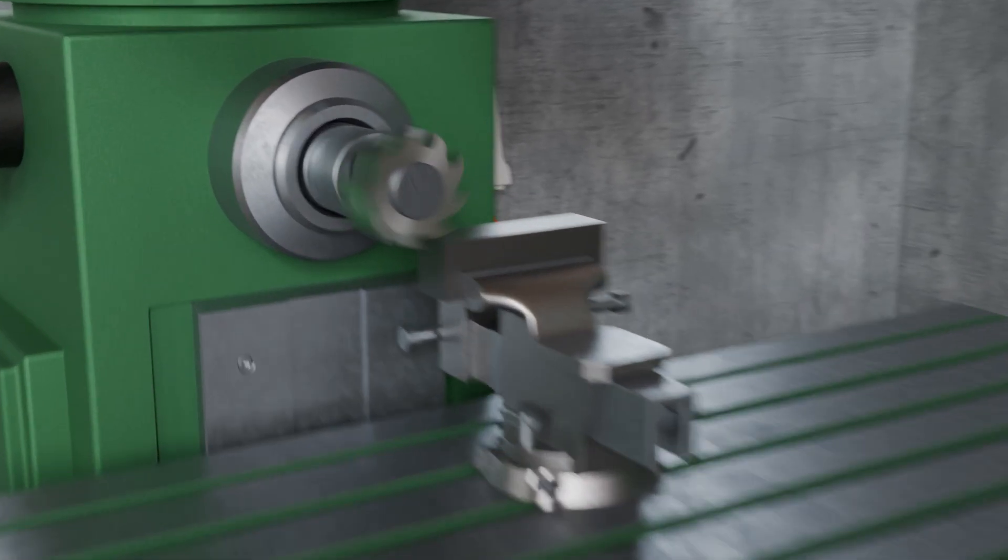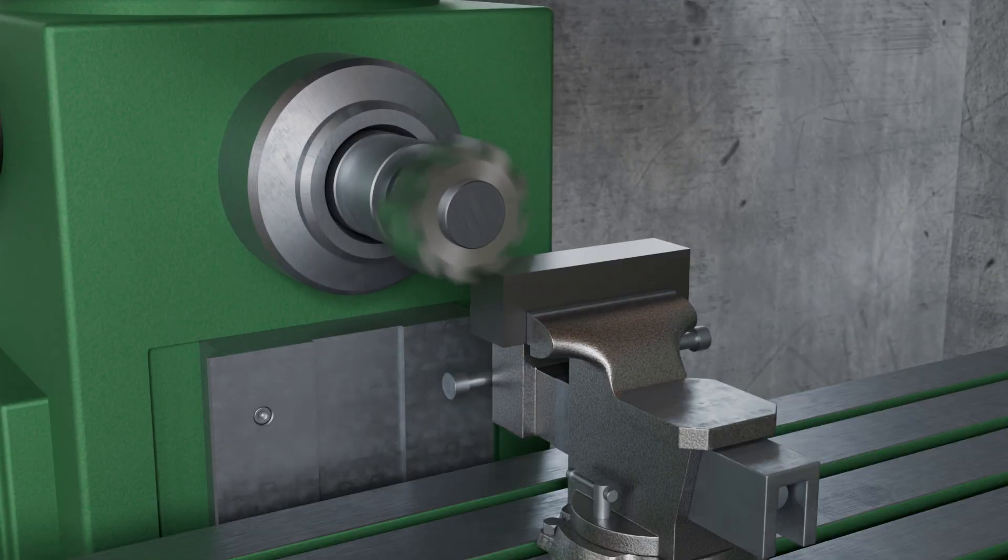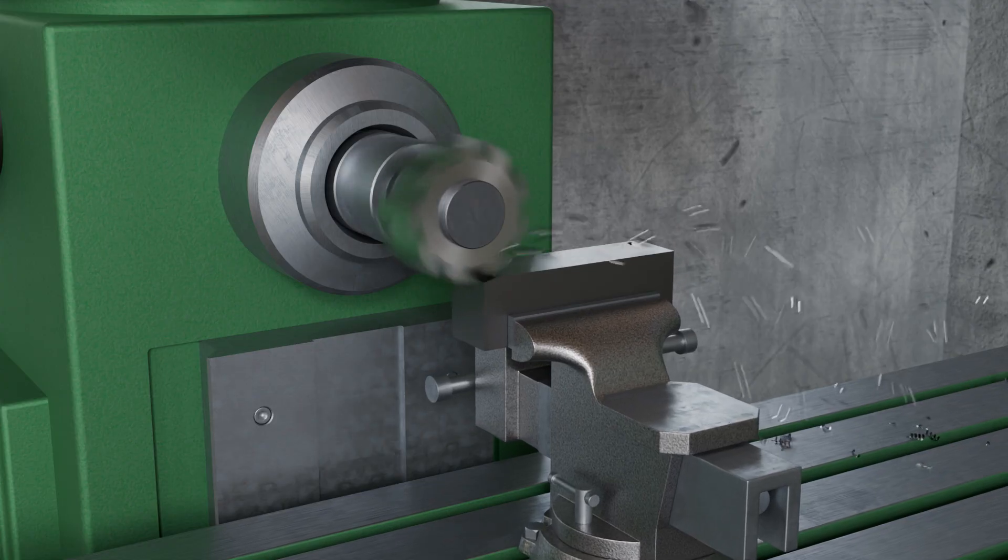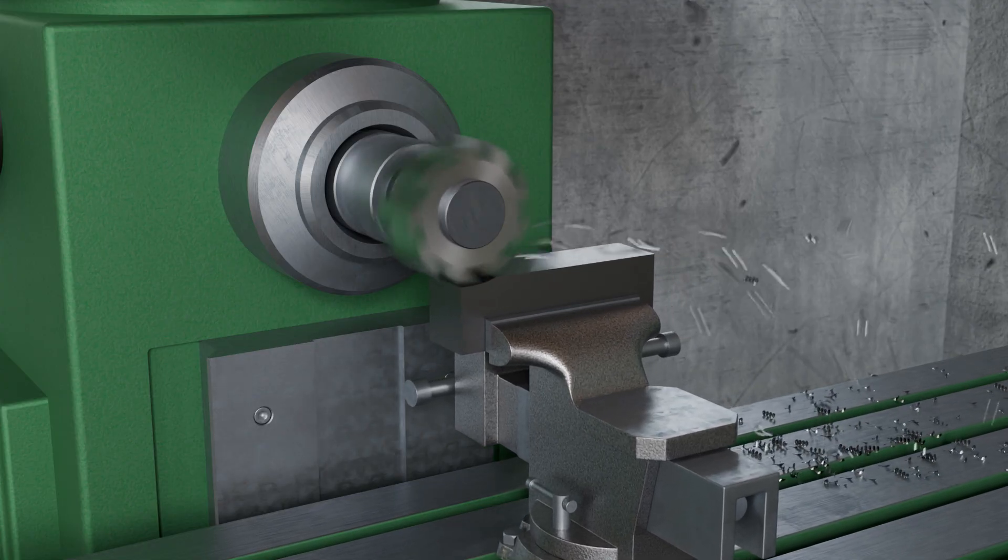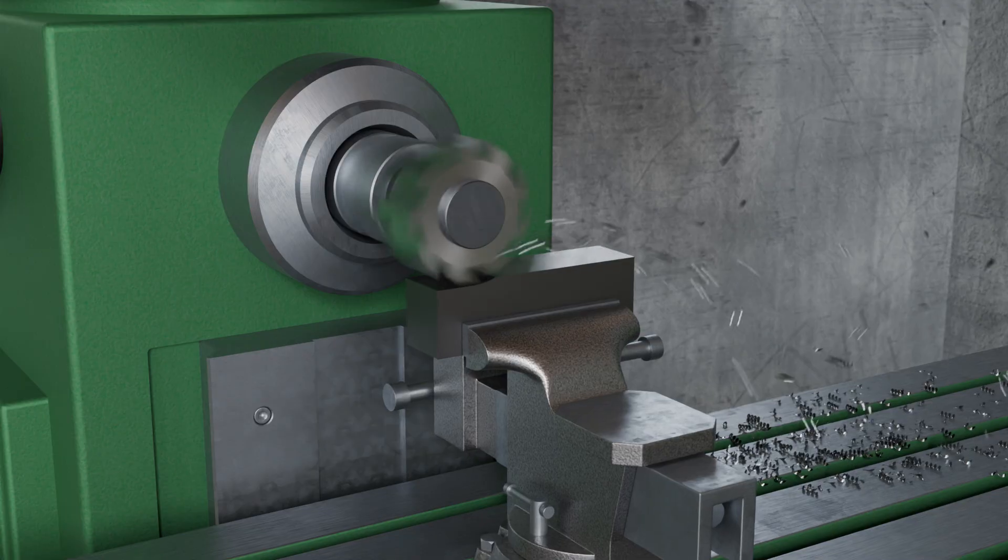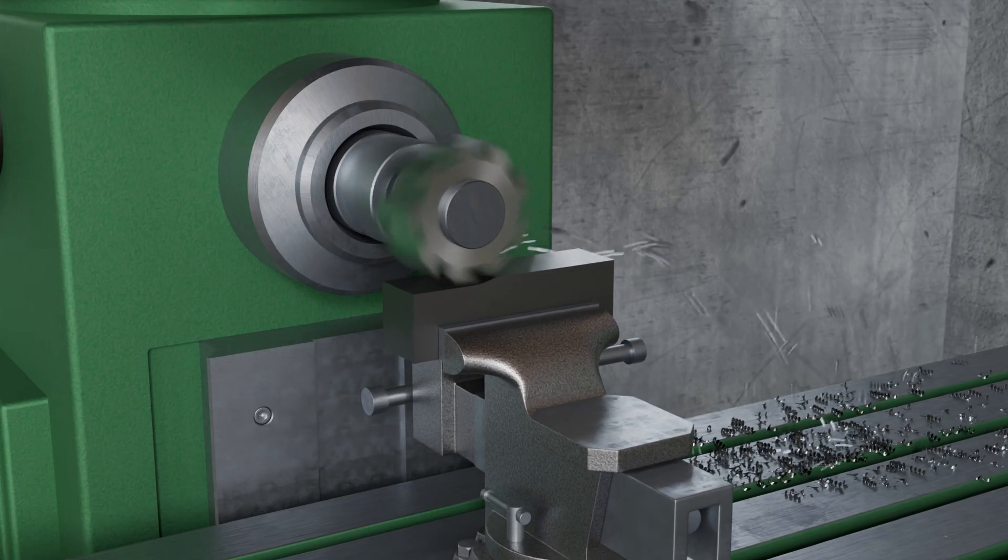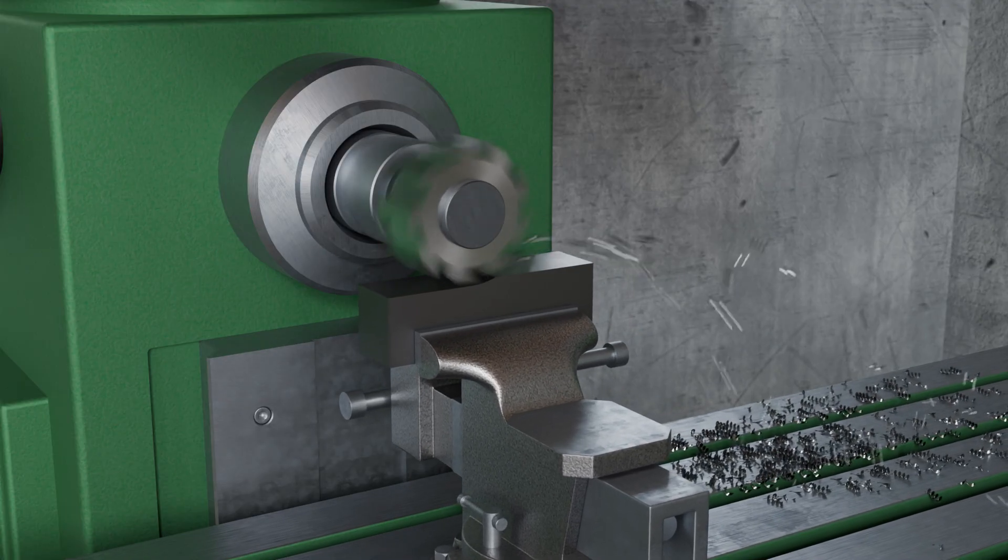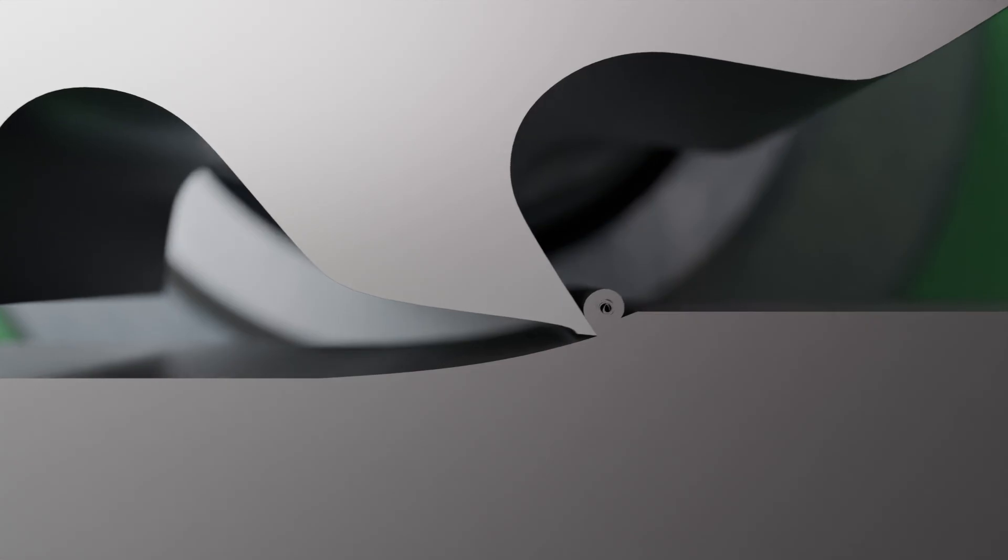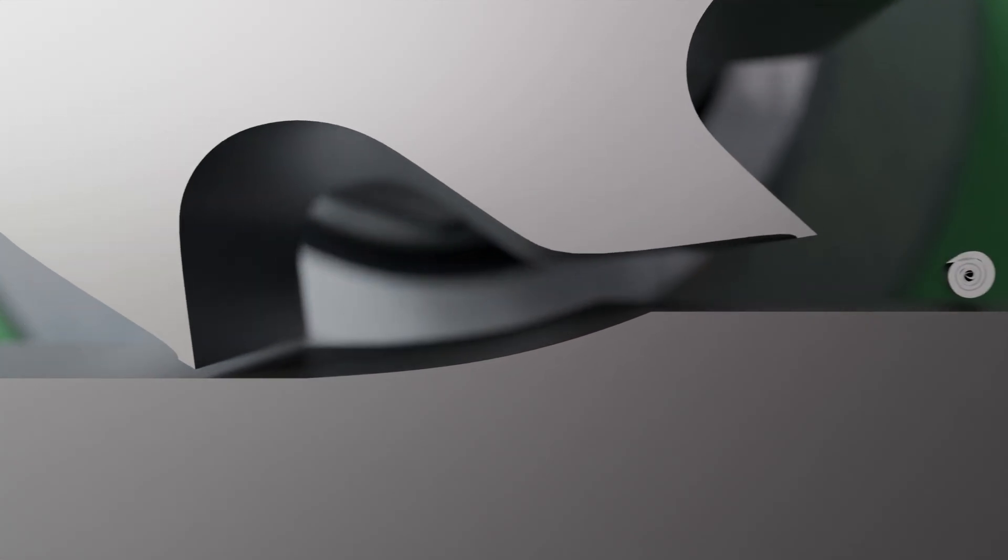In this video, we take a closer look at the various milling methods. As explained in the video on the fundamentals of machining, in milling the circular cutting motion is executed by the multi-edge tool, while the workpiece typically performs the in-feed and feed motion. Since the cutting edges are not continuously engaged but repeatedly penetrate and exit the material, relatively short chips are formed due to the interrupted cut.